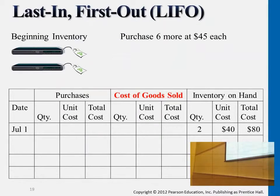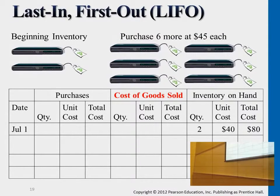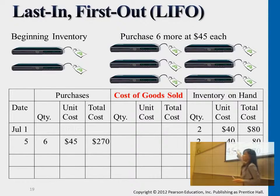Going back to that exact same example, we start from the beginning inventory with two DVD sets, each at $40. This is exactly the same as FIFO. Then we purchase six more at $45 each. Up to this part it is still the same as FIFO — we just add the purchase transactions in.